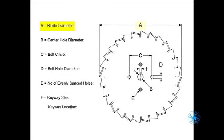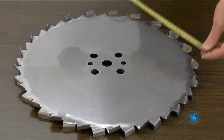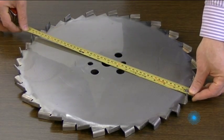Dimension A on the form is simply the blade's outside diameter. Be sure to measure the teeth from tip to tip through the center of the blade.